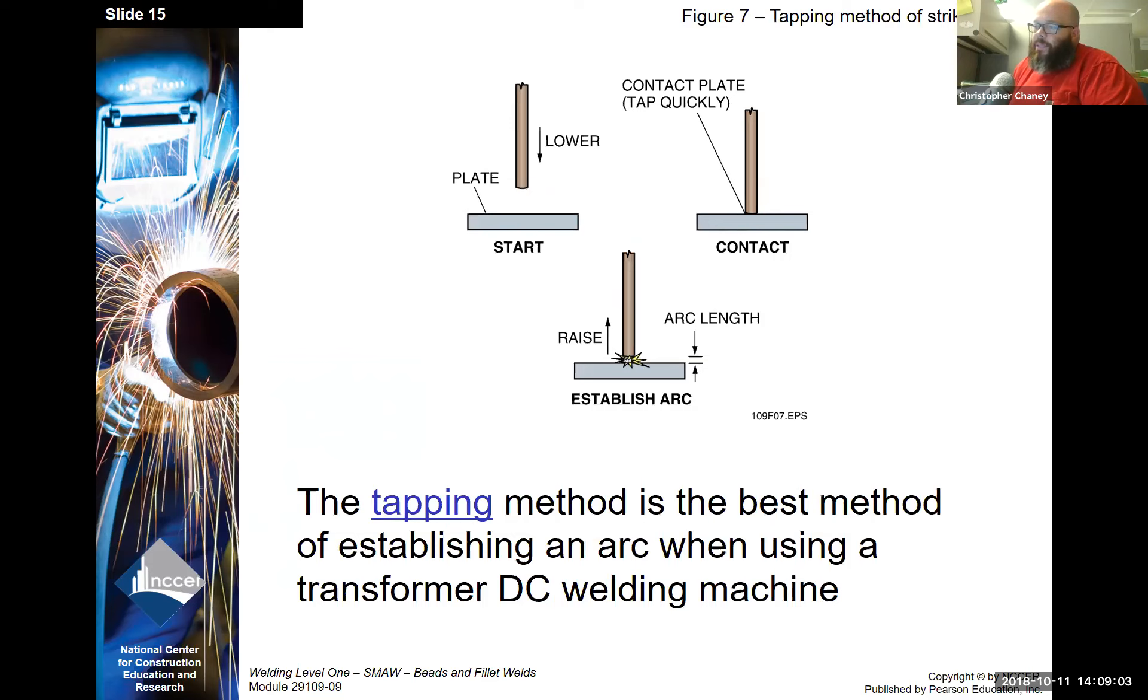The tapping method is the best method for establishing an arc when using a transformer DC welding machine. Also with the tapping method, you can actually guide the rod and have a lot more control over where you start your weld and where you strike your arc.